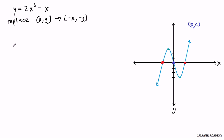Wherever we see a y, we're going to put a negative y. And wherever we see an x, we're going to put a negative x. Make sure if there's an exponent, you put that negative x in parentheses minus negative x.